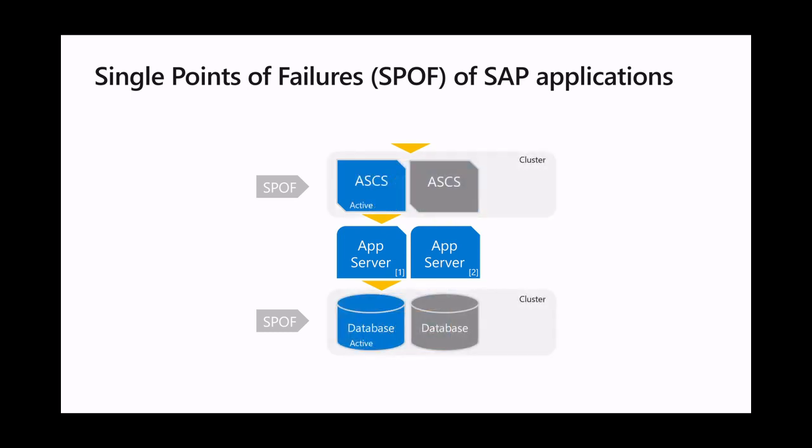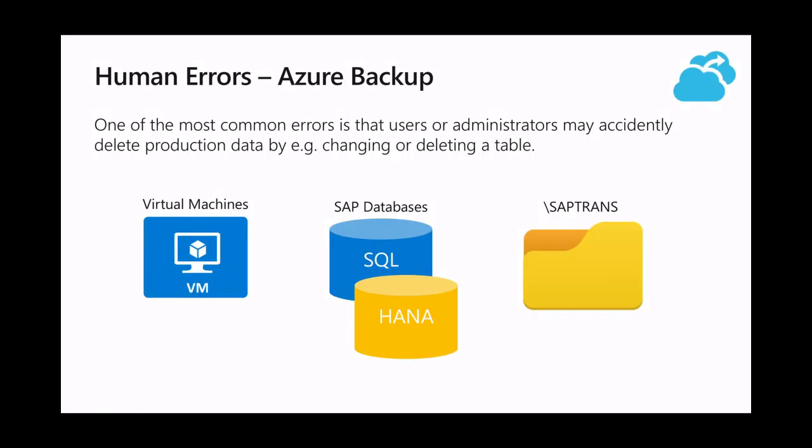The most simple way that SAP offers is to make these two components highly available in an active-passive mode. As the primary instance becomes unavailable, it simply switches over to the HA instance, removing the single point of failure. Just to remember, this is an overview session — we're not going to take a deep dive here. The deep dive will come in subsequent sessions.